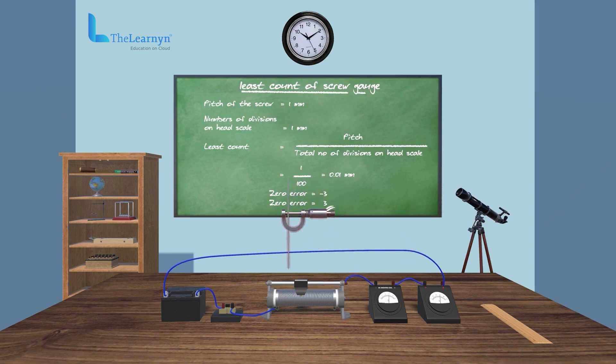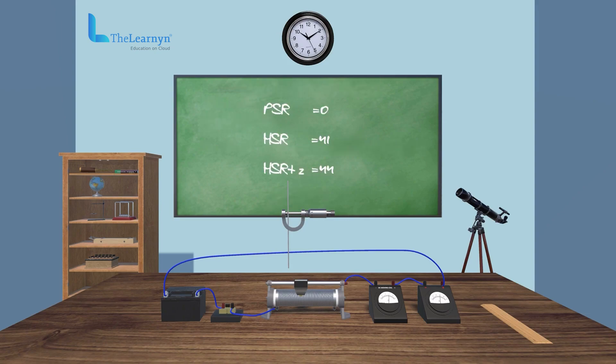The resistance wire is gently gripped between the stud and the screw of the screw gauge. Pay attention to the pitch scale reading and head scale reading.